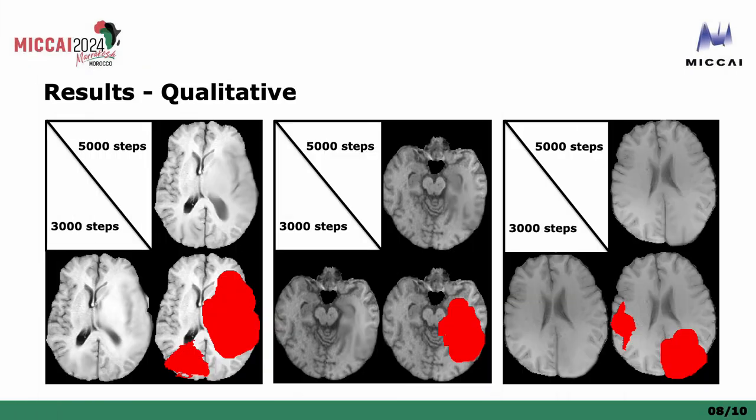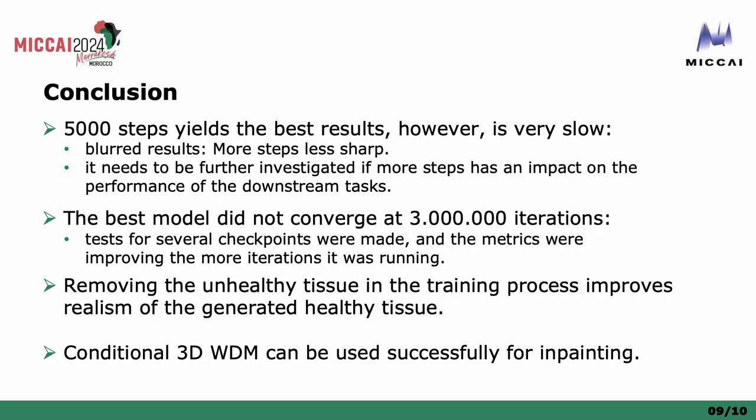Here are presented three distinct cases from the validation set. It can be seen that by using 5000 steps, the quality of the generation increases in comparison with 3000 steps, as also seen by the quantitative results. Although in some cases, the inpainted region looks fuzzier. From our experiments, we could conclude that using more steps for inference results in better generation, however visually fuzzier. Increasing the number of steps also increases the inference time, and it needs to be studied in a downstream task if this leads to any improvement.